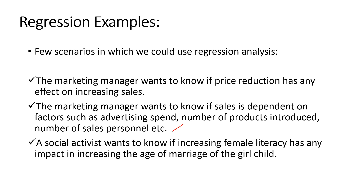Two methods are there: bivariate regression and multiple regression. Bivariate means only two variables — one dependent and one independent. For multiple regression, there are many independent variables and one dependent variable.